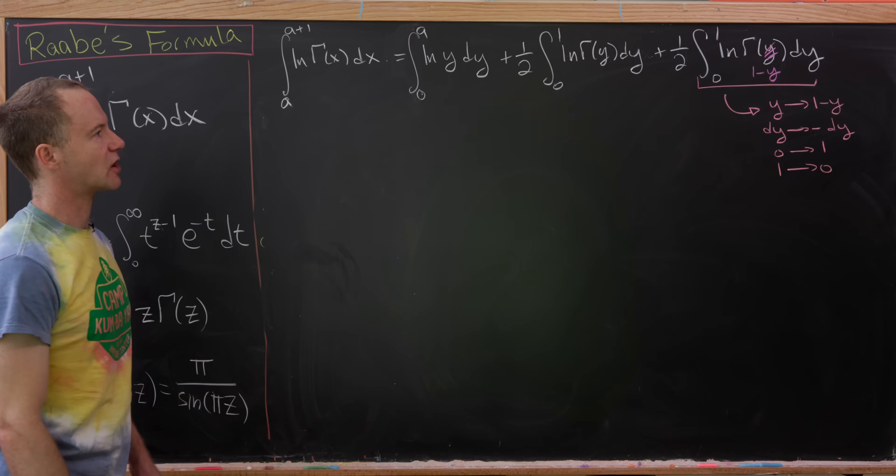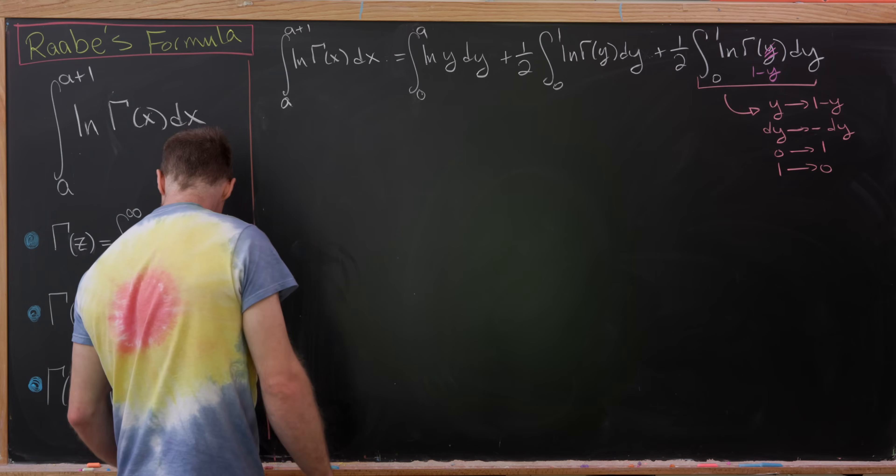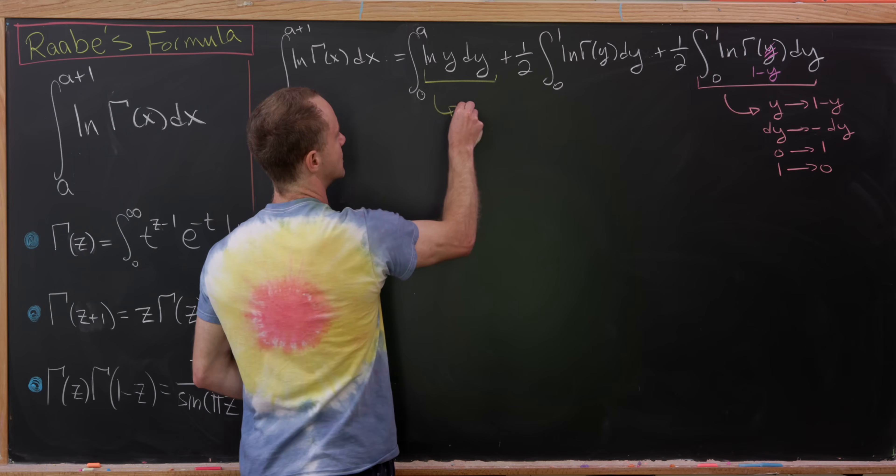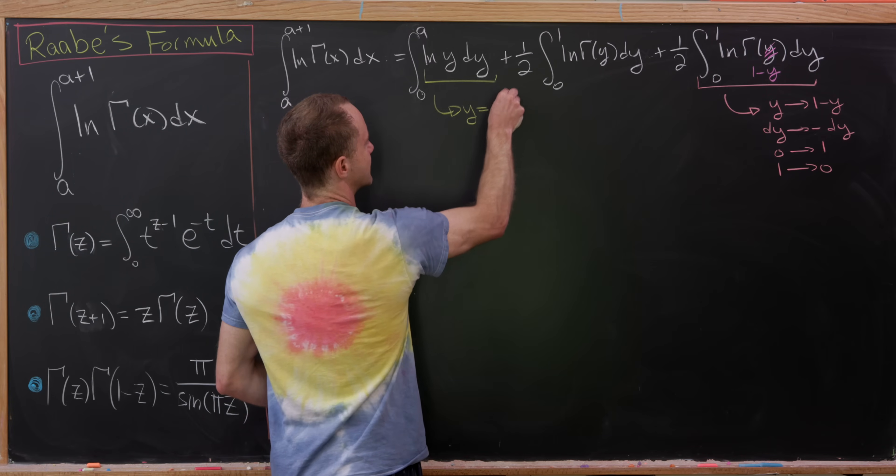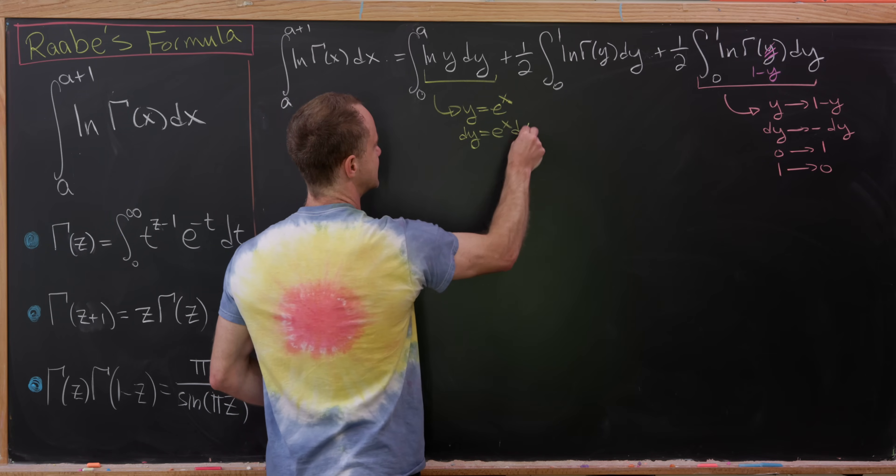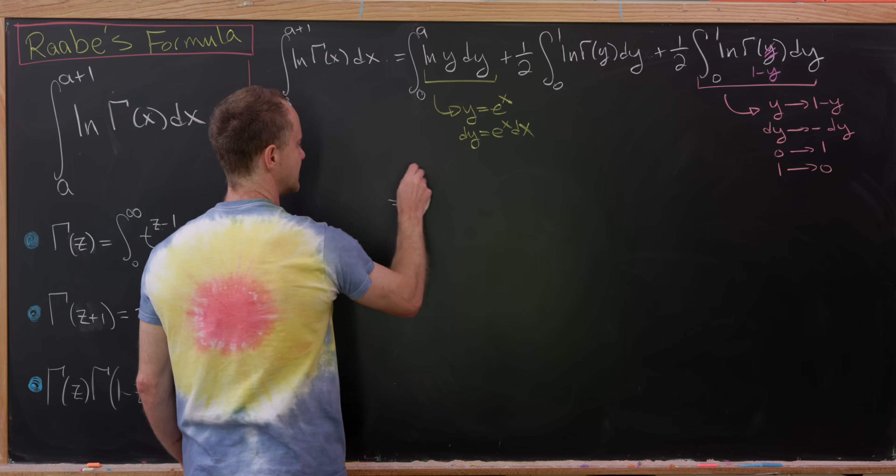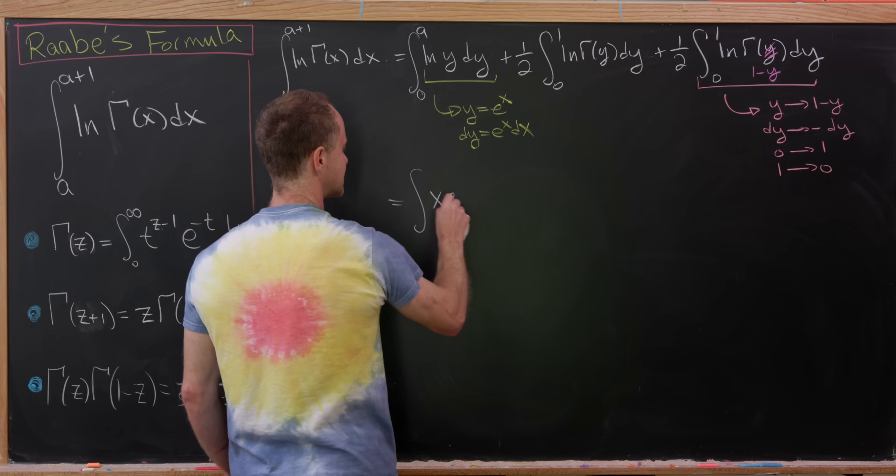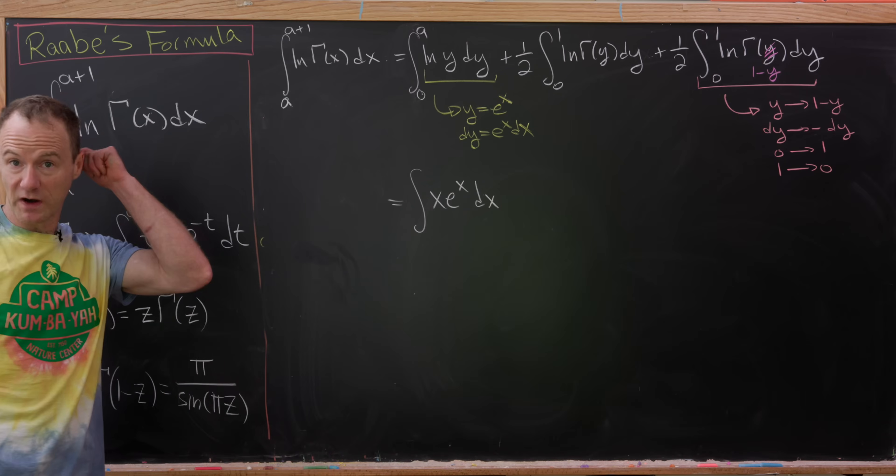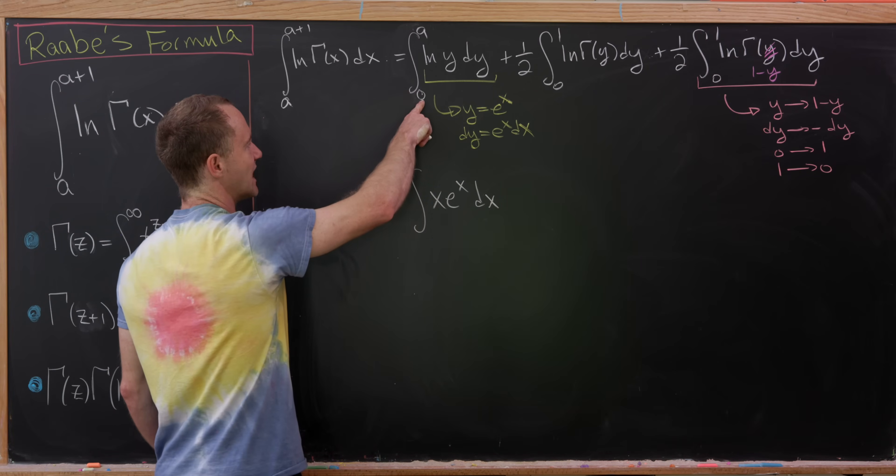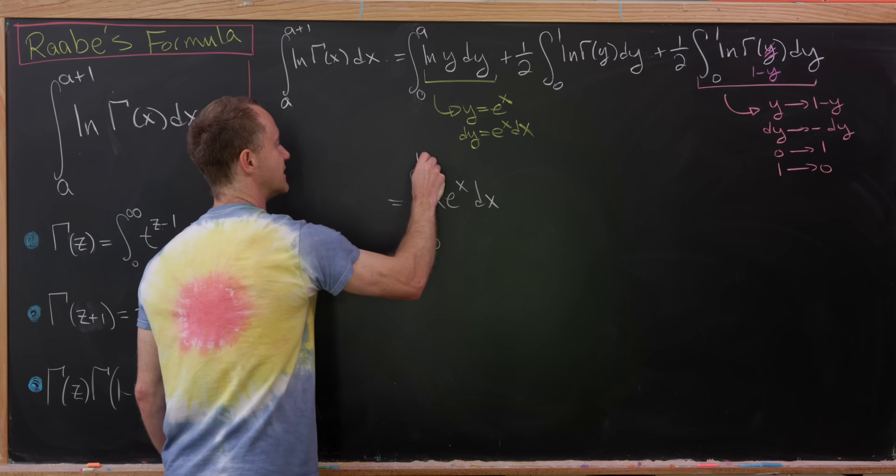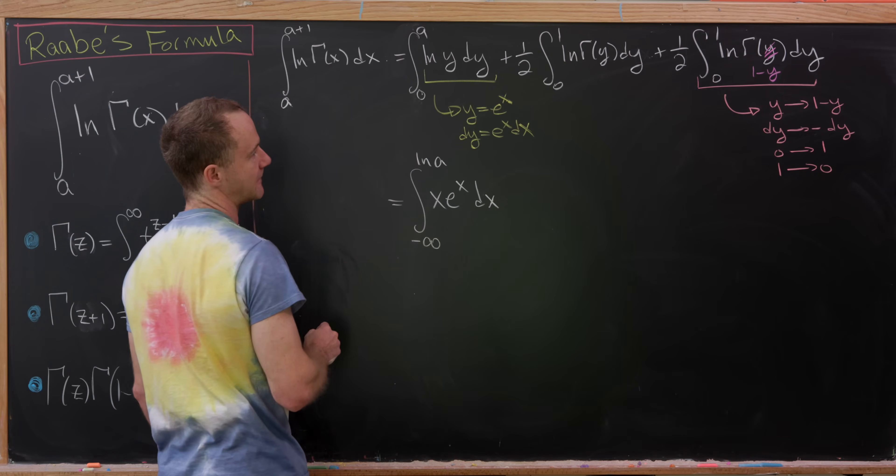Okay, and then we can start putting those things together. But before we do that, I'd like to also do a change of variables over here on this first integral. I'll take y and replace it with e to the x. So notice that means dy is e to the x dx. That will give us the integral of x times e to the x dx. Then what about the bounds of integration? Well, as y approaches 0 here, we'll have x approaching minus infinity, and then this will be the natural log of a.